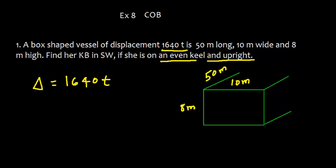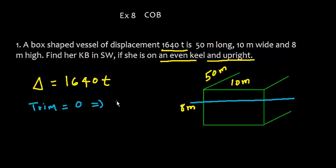Even keel means the water line is the same length throughout — the vessel is not trimmed. Even keel means trim is zero. In this case we need to first find what the draft is going to be. Let me mark the draft here and call it x.